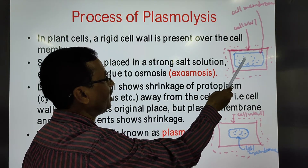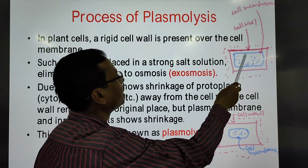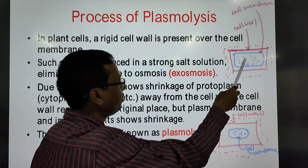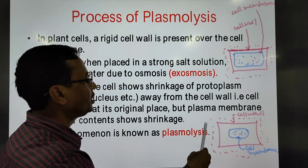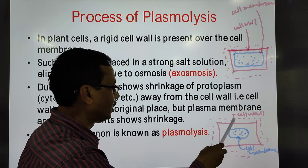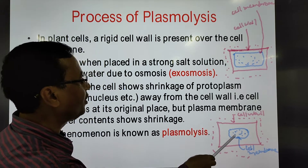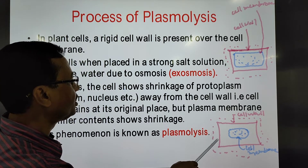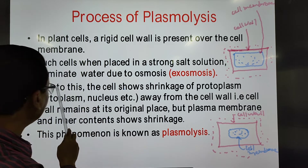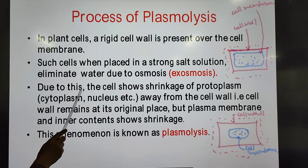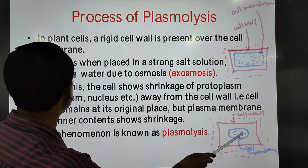The water content is lost from the protoplasm, and as a result the protoplasm shrinks. The protoplasm is bounded by the cell membrane, so the cell membrane will move away from the cell wall. The cell wall remains in its own place while the protoplasm shrinks.